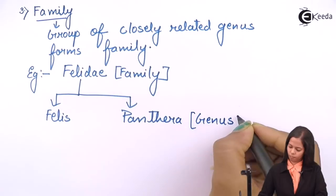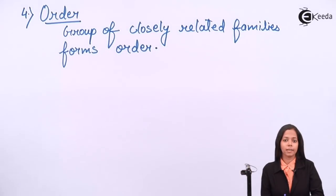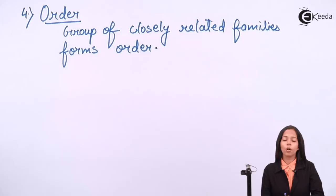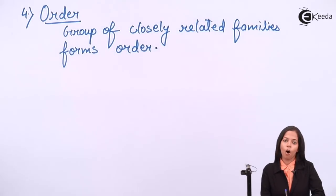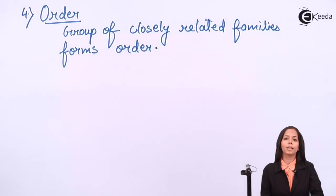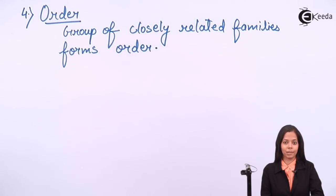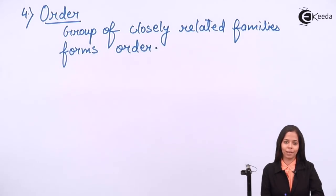The next category is order. A group of closely related families forms an order. An example of order is Carnivora. Under Carnivora there are two families: Felidae, the cat family, and Canidae, the dog family.